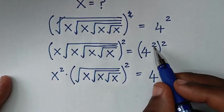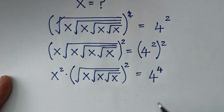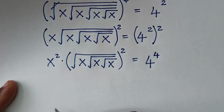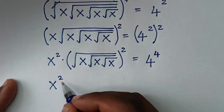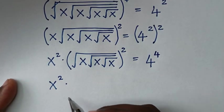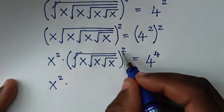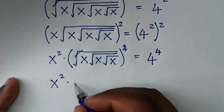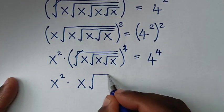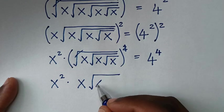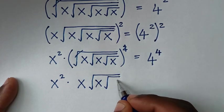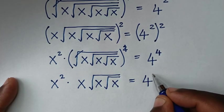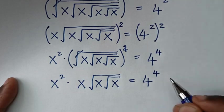We'll multiply the powers: 2 times 2 is the power of 4. Then in the next step, it will be x squared times — from here, this square root will cancel with this square — so it will be times x times square root of x is equal to 4 to the power of 4.